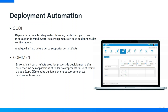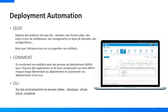Dans cette logique applicative, vous pouvez coordonner le déploiement des différentes applications entre elles : les déployer en parallèle, en série, s'arrêter si le déploiement de la première application échoue. Toute cette logique de déploiement, vous devez la définir dans Deployment Automation. Vous déployez sur des cibles : serveurs physiques, serveurs virtuels VMware, cloud (Amazon, Azure), ou des conteneurs Docker.